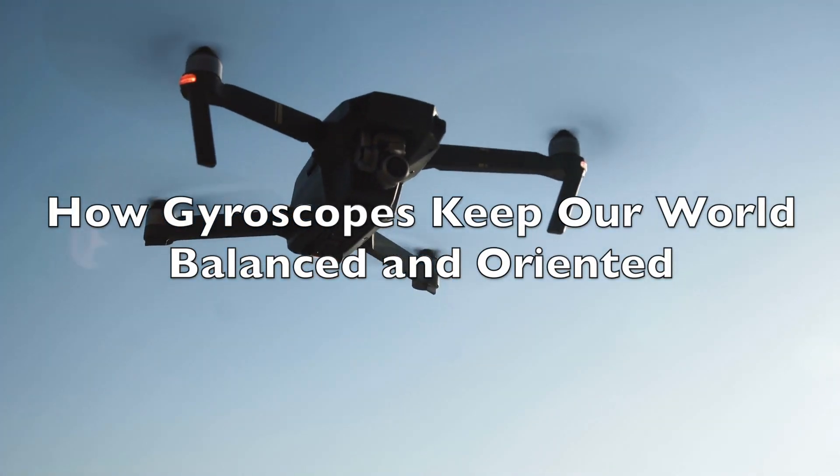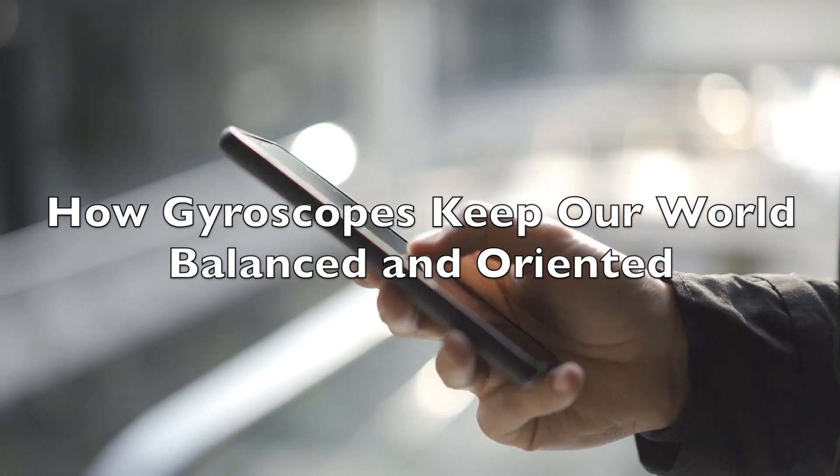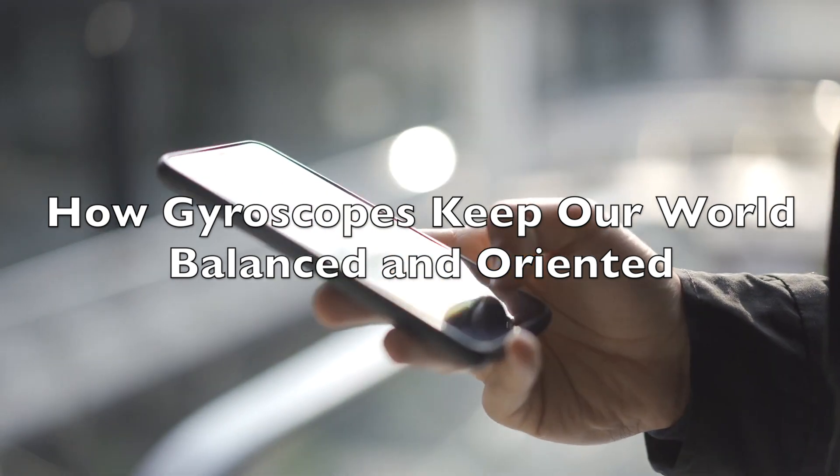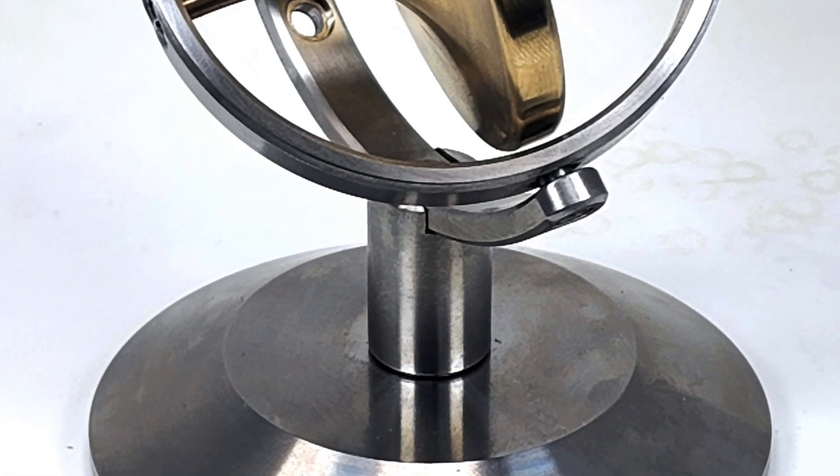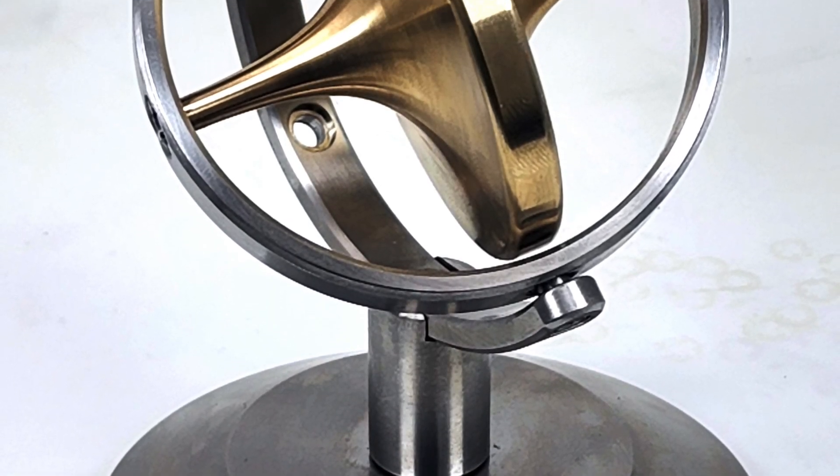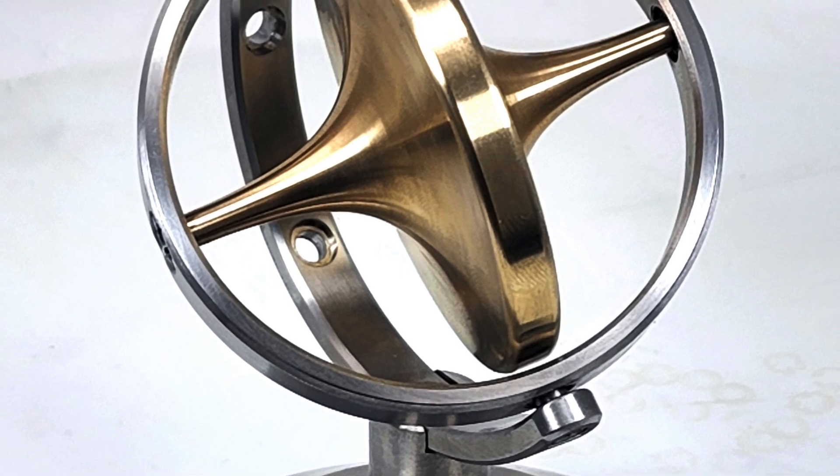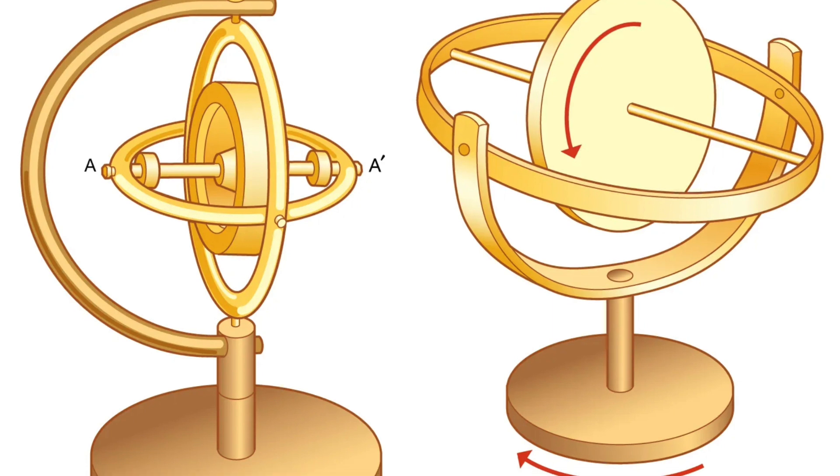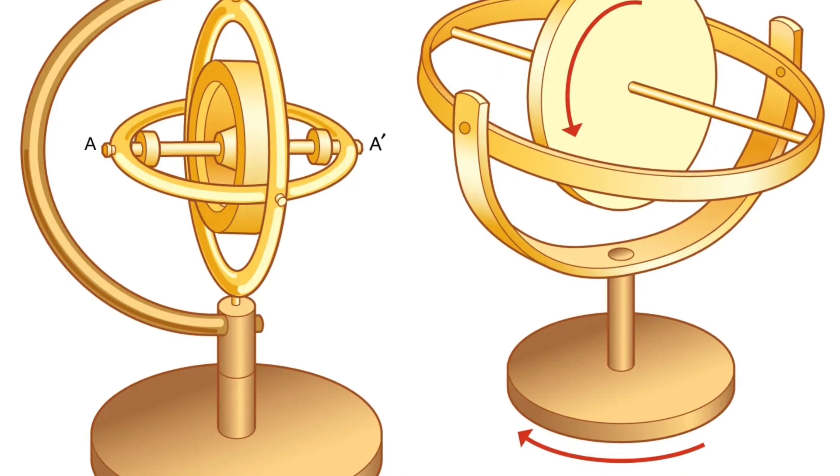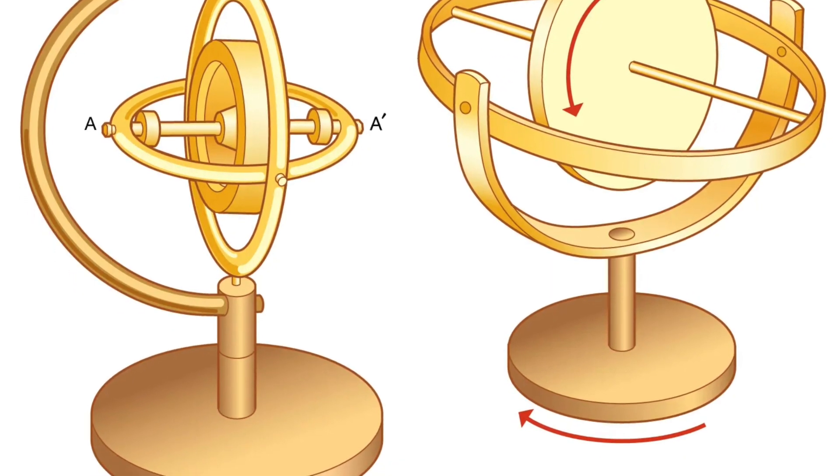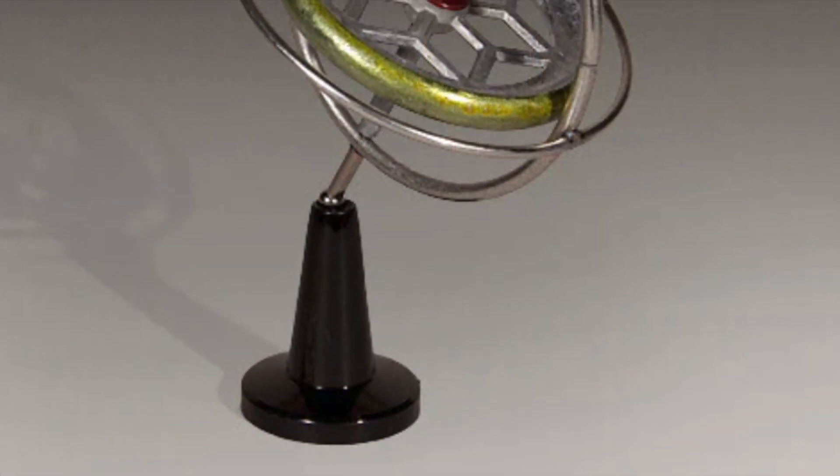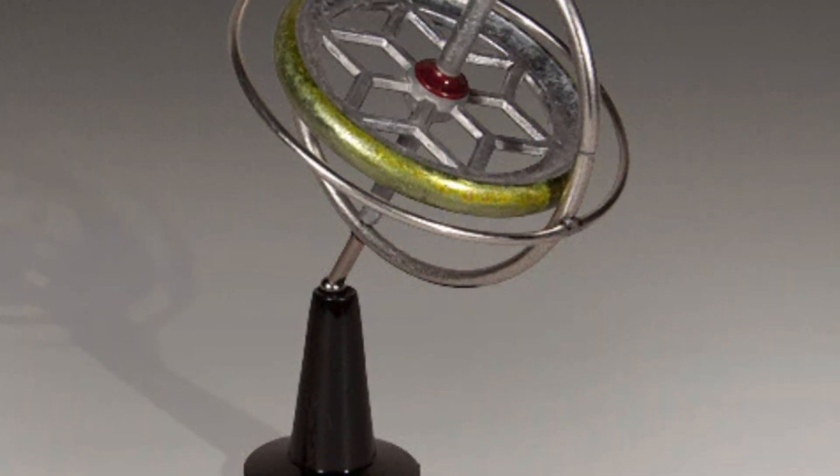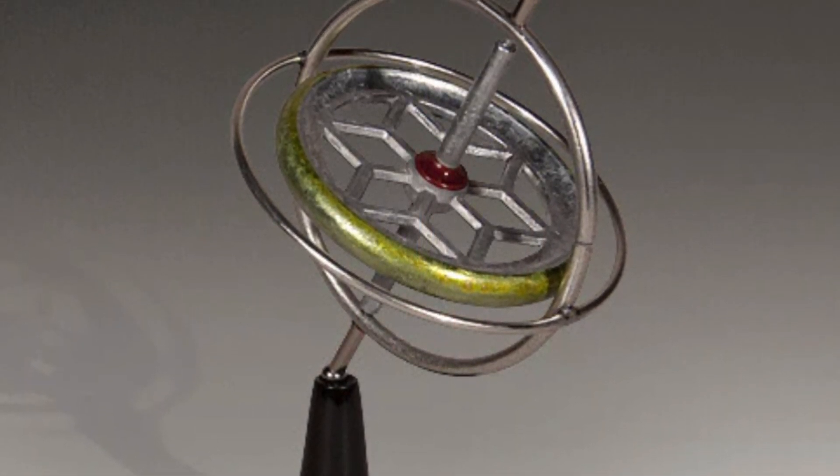From the heart of our cities, where drones zip through the skies, to the smartphones in our pockets, and even to the simplest of toys, gyroscopes play a pivotal role in modern technology. But what exactly is a gyroscope, and how does it manage to maintain balance and orientation so effectively? Today, we delve into the fascinating world of gyroscopes, uncovering the principles that make these devices indispensable in a wide array of applications.